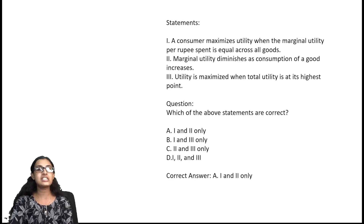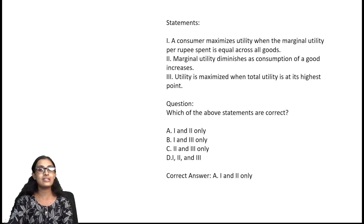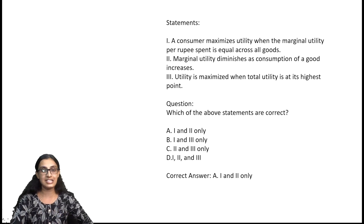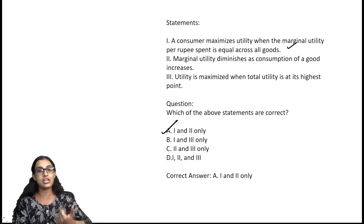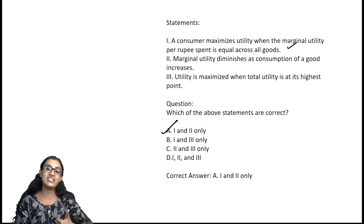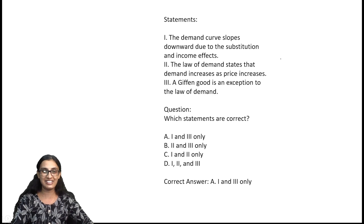First question: a consumer maximizes utility when the marginal utility per rupee spent is equal across all goods; marginal utility diminishes as consumption of a good increases; utility is maximized when total utility is at its highest point. The right statement is option A — consumer maximizes utility when marginal utility per rupee spent is equal across all goods.